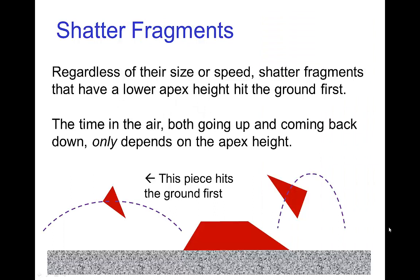Now in this example, it reminds us that regardless of the size or speed of a fragment, each fragment will be a certain time in the air that depends only on how high that fragment goes. In that example we just saw, there were two pieces that broke off simultaneously. The small piece happened to go fast but low to the ground, so it hits the ground first. The other piece flies up higher and then hits the ground next.